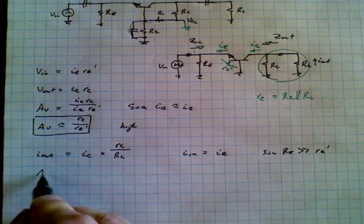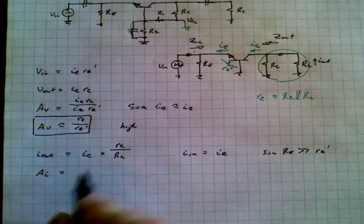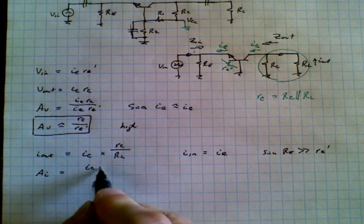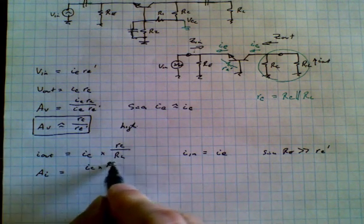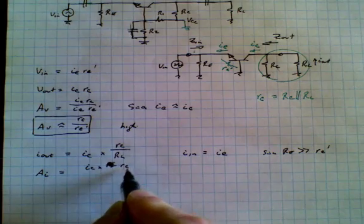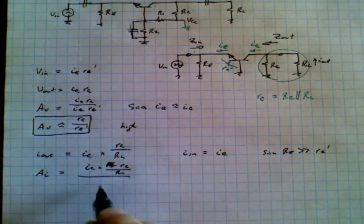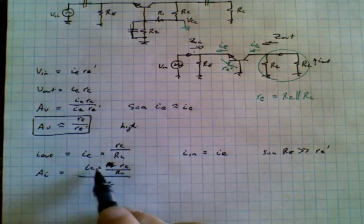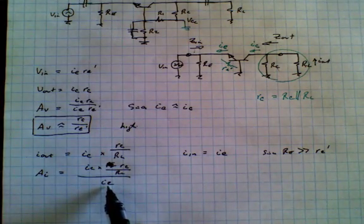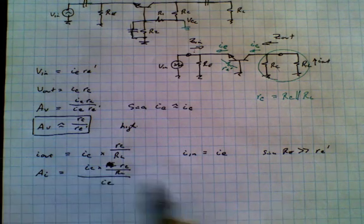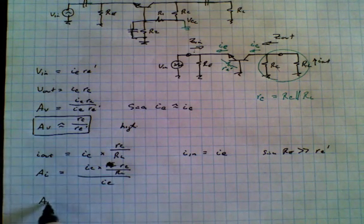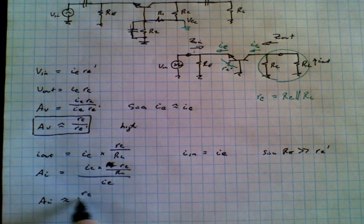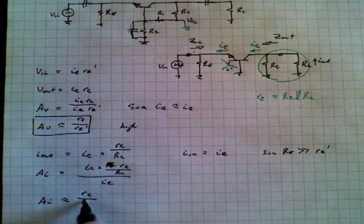Therefore, the current gain is equal to the output IC times RC little rc, little c, divided by RL, all divided by IE. And because IC is roughly equal to IE, this reduces very nicely to the current gain is approximately equal to little rc, little c, divided by RL.